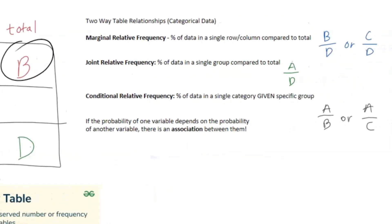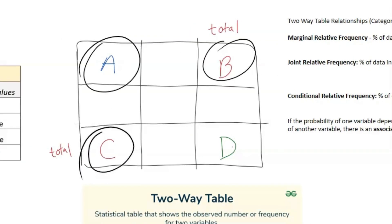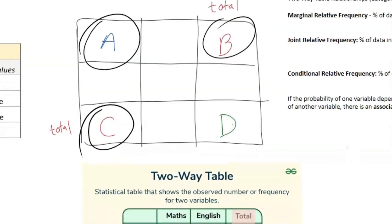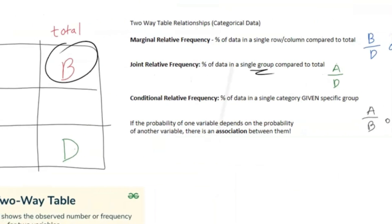The next thing we're going to look at is joint relative frequency. So that's a percentage of data in a single group compared to total. So group here, that might be a little confusing, is just we're going to look at A. So that's just a singular variable or intersection that we're going to look at between a certain variable. So that's A over D.